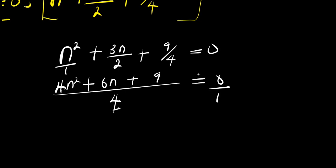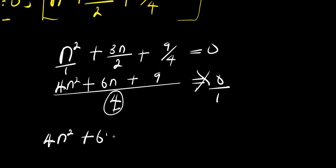Cross-multiplying by 4 on both sides, we get 4n² plus 6n plus 9 equals 0.